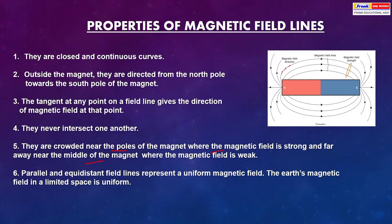Parallel and equidistant field lines represent a uniform magnetic field. The earth's magnetic field in a limited space is uniform. They behave like a stretched elastic rubber string.